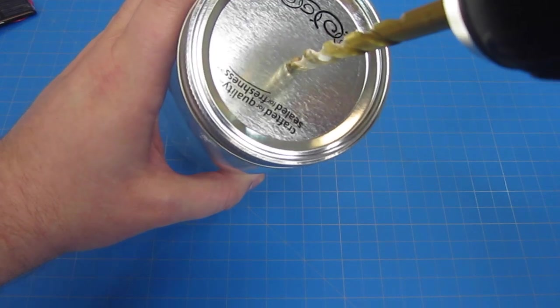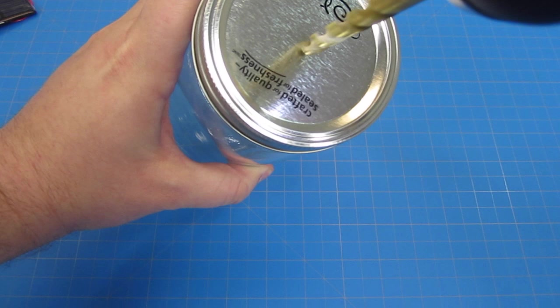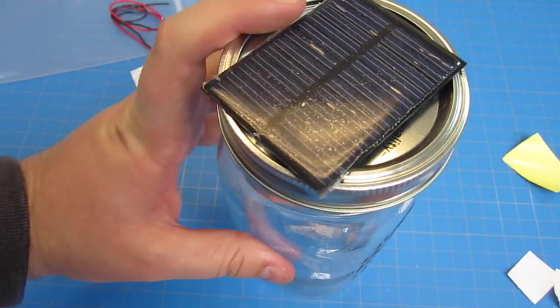A wide-mouthed mason jar makes a great enclosure that looks nice and is also extremely cheap and simple. You just have to drill a hole in the top and stick everything on the inside with double-sided foam tape.